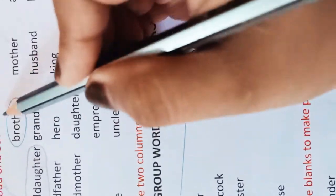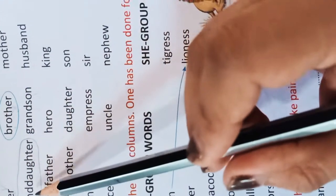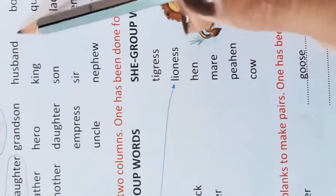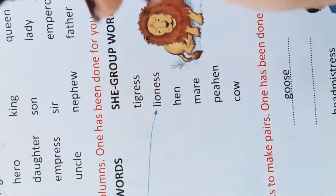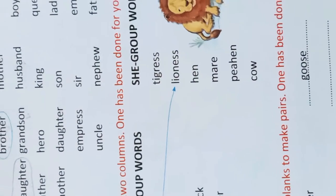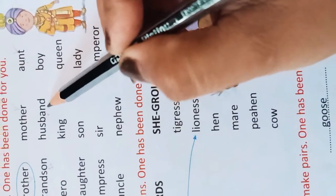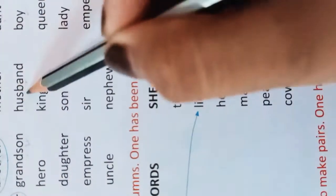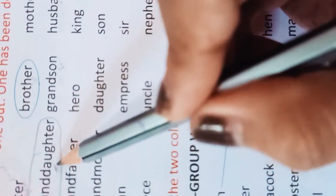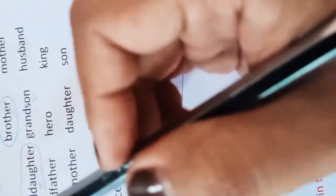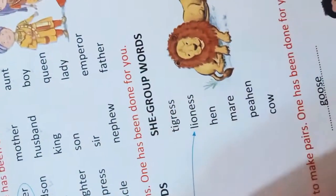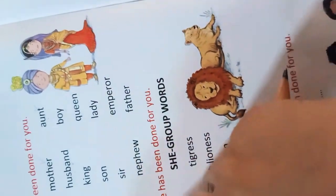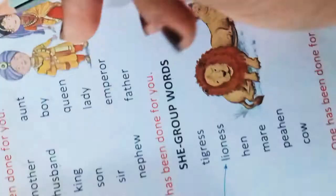Brother is already circled. In number two: granddaughter, grandson, husband, and boy — grandson, husband, and boy are all He group words, but granddaughter means granddaughter (पोती), so granddaughter is the odd one. In number three: father, hero, king, and queen — the odd one is queen, because queen belongs to the She group.